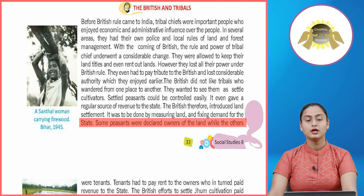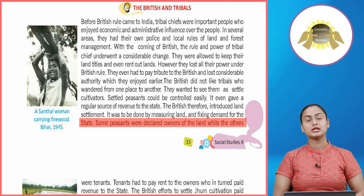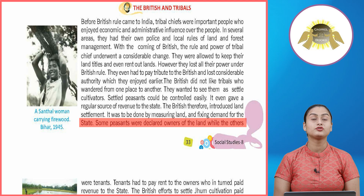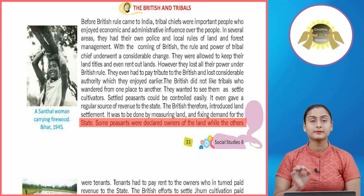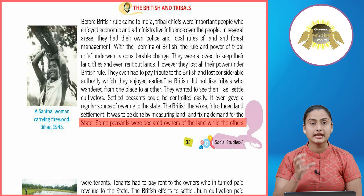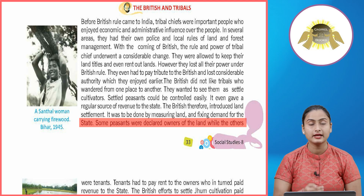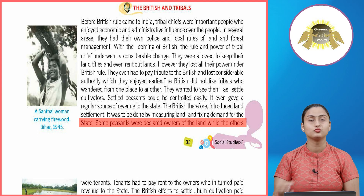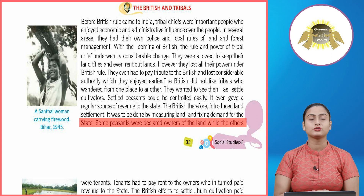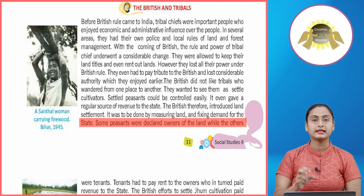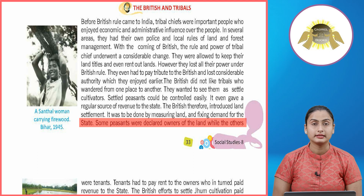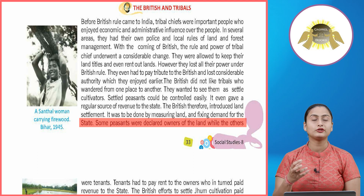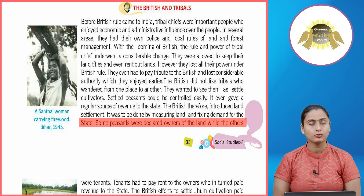When the British realized that tribals traveled from one place to another practicing jhoom cultivation, they promoted settled cultivation. The main reason was that a settled tribe was easier to control than one moving from place to place. Tenants directly paid revenue to the British at a high margin, though sometimes scarcity of water and resources created problems.